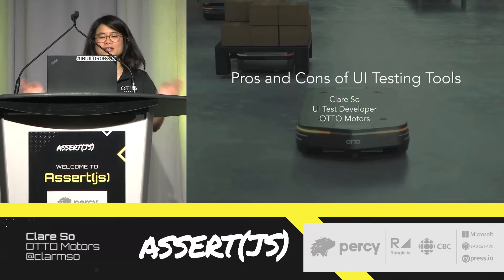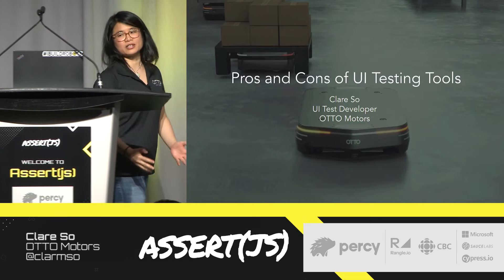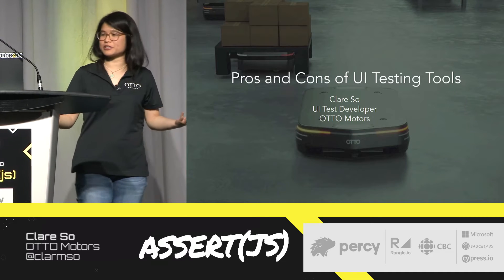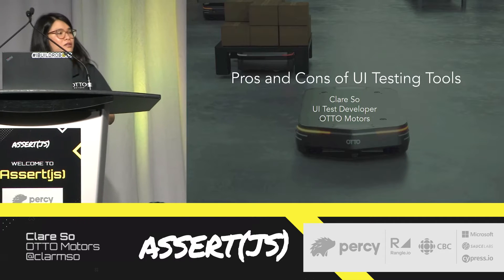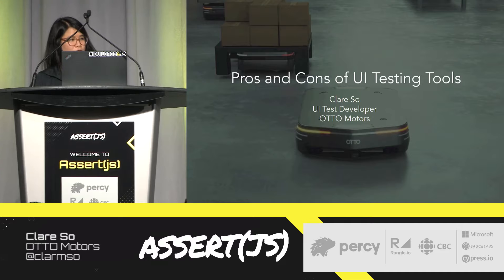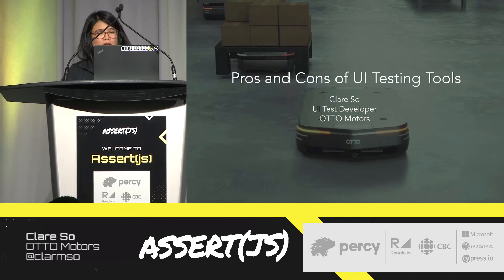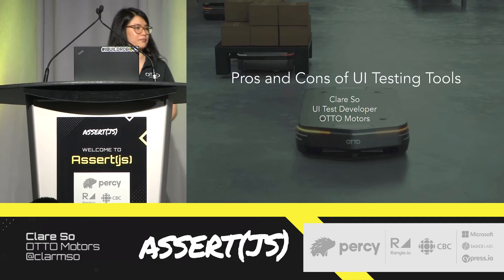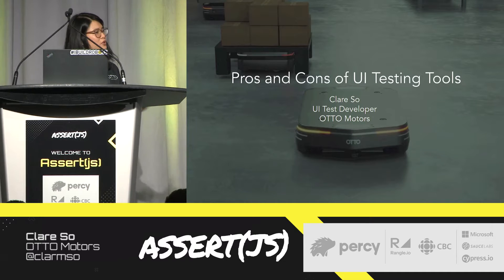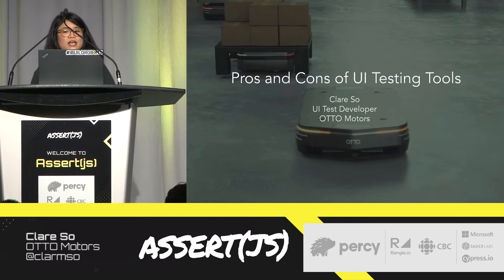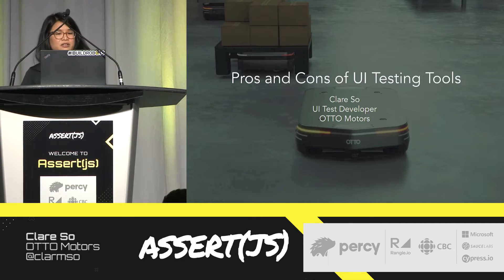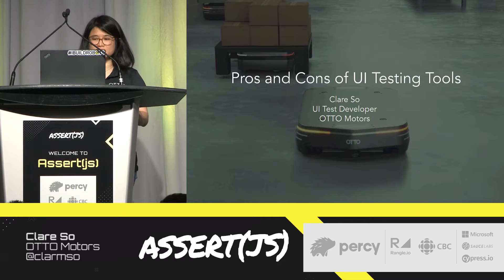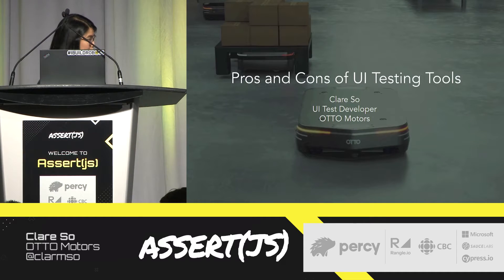Hi, everyone. I'm Claire, and I'm a UI test developer at Auto Motors, a division of ClearPath Robotics. The company was founded by four University of Waterloo graduates from the Mechatronics program. In 2009, they entered a robotics competition where they built a robot that detects landmines so humans didn't have to risk their lives, and they won the competition.